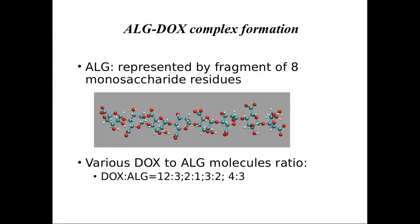For the alginate biopolymer simulations, we used oligomers containing monosaccharide residues, as shown in the picture, and we studied several different ratios of doxorubicin drug to alginate molecules in the system.